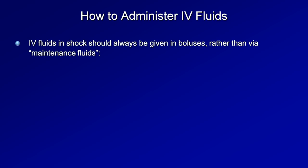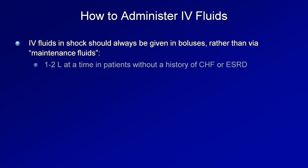So we've tackled what fluids to give, but how should they be administered? IV fluids in shock should always be given in boluses rather than via maintenance fluids. How large those boluses should be depends upon the patient. For patients in shock requiring IV fluids who are without a history of either CHF or end-stage renal disease, one to two liters at a time is typically ordered. The influential Surviving Sepsis Campaign specifically recommends 30 mL per kg of crystalloid fluid as an initial fluid challenge.